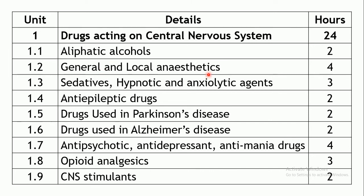The next chapter is general and local anesthetics — drugs used to abolish all sensations in a particular area under local anesthetic, or the whole body under general anesthetic. You will study the stages of anesthesia, mechanisms, different types of anesthetics, and pre-anesthetic medication. These two chapters are allotted 4 hours.